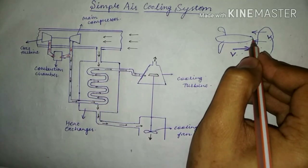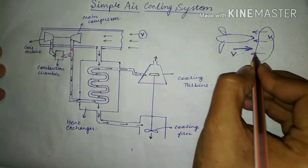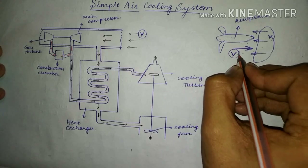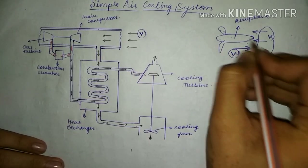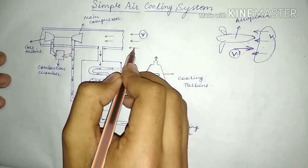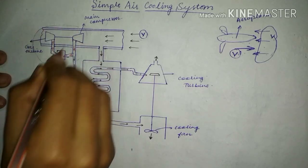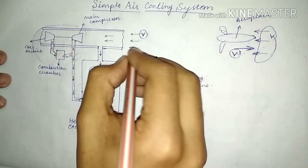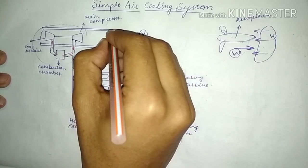We design the body of the aircraft so that the high velocity V of the air entering from the front is utilized for the refrigeration system. This velocity is used to run the turbine and compressor, and this air entering the system is called ram air.